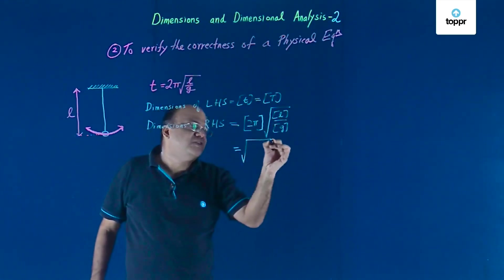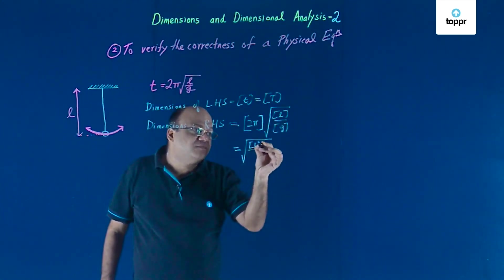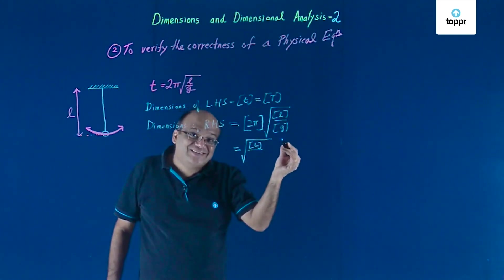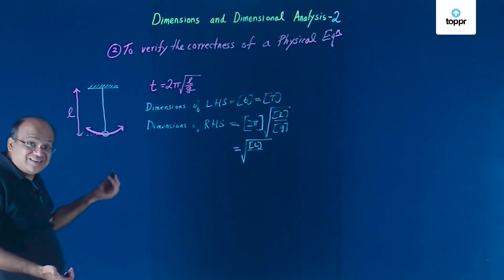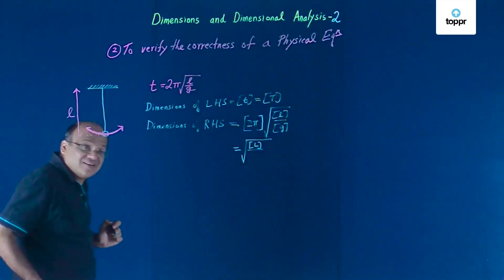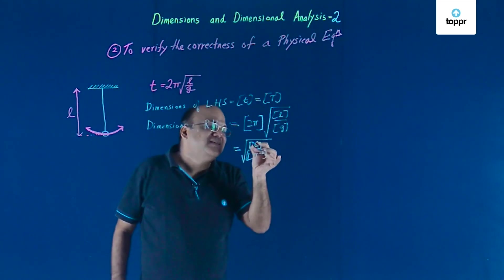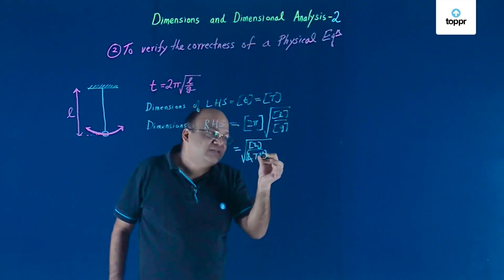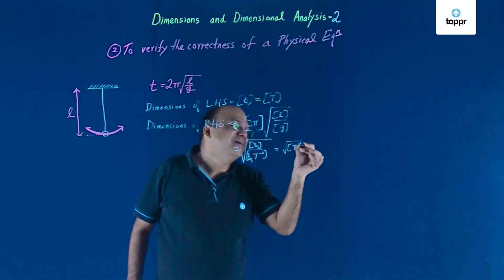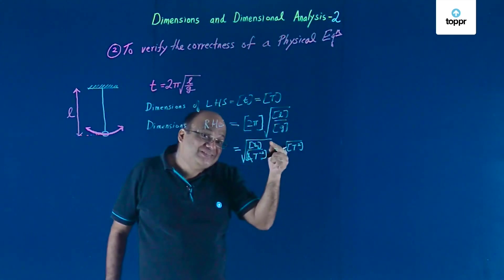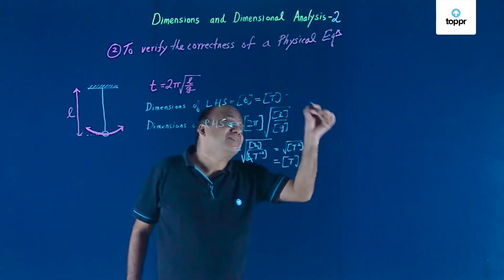Now we have the square root of L by G. The dimension of L is L. G is acceleration, and the dimension of acceleration is LT⁻². So we have the square root of L divided by LT⁻². The L and L cancel out, T⁻² comes to the numerator, and we get the square root of T², which equals T.